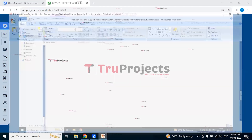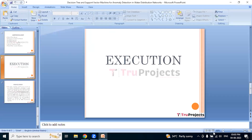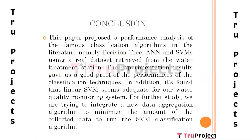In conclusion, in this project we executed the code and found that among the Decision Tree algorithm, RNN algorithm, and Support Vector algorithm, the best predicted performance with the highest accuracy is the RNN algorithm for predicting anomalies in water distribution networks.